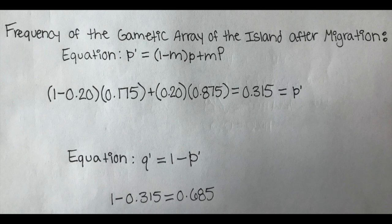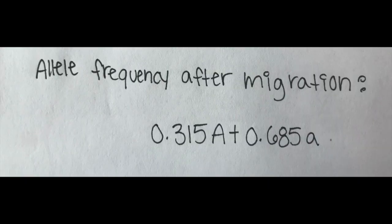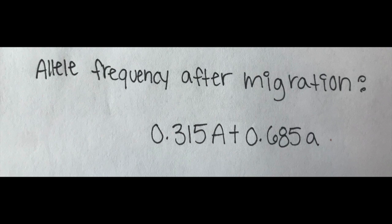To find the frequency of the recessive A allele, we do q' equals 1 minus p'. So our allele frequency after migration is 0.315 dominant A and 0.685 recessive A.